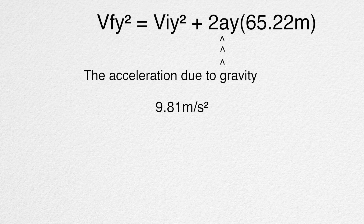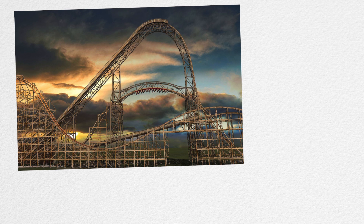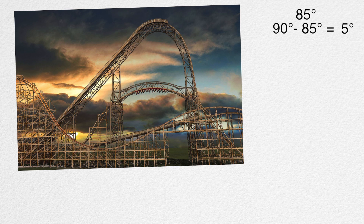The acceleration due to gravity would normally be 9.81 meters per second squared, but the drop of RMC Mean Streak is going to be at an angle. Nothing is available to tell us the exact new angle, so we're making an educated guess. Looking at Goliath, another RMC, its drop angle is 85 degrees. To find the adjusted gravity, we take 90 degrees minus 85 degrees, which gives 5 degrees. Then 9.81 times cosine of 5 degrees gives us 9.77267 meters per second squared.